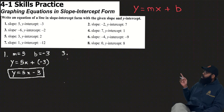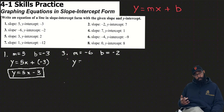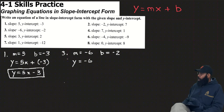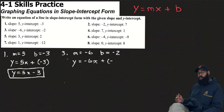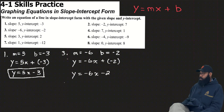Number 3: slope m equals negative 6, b equals negative 2. So y equals negative 6x minus 2. No need for double operations — we don't say plus negative 2, we just write minus 2.